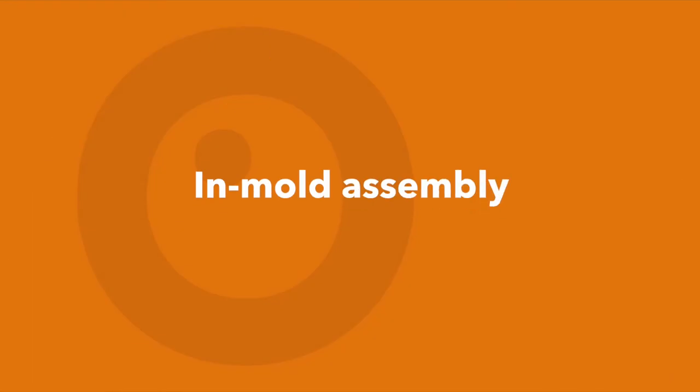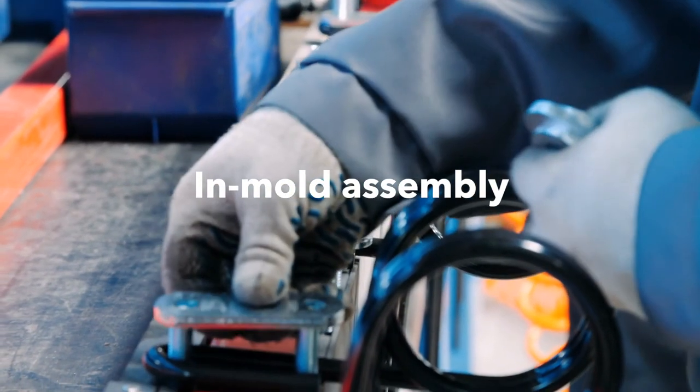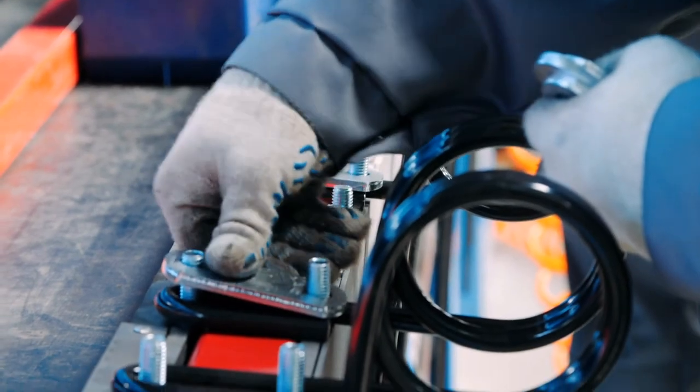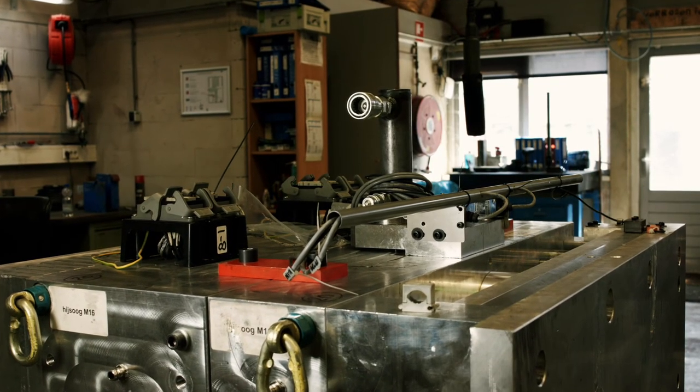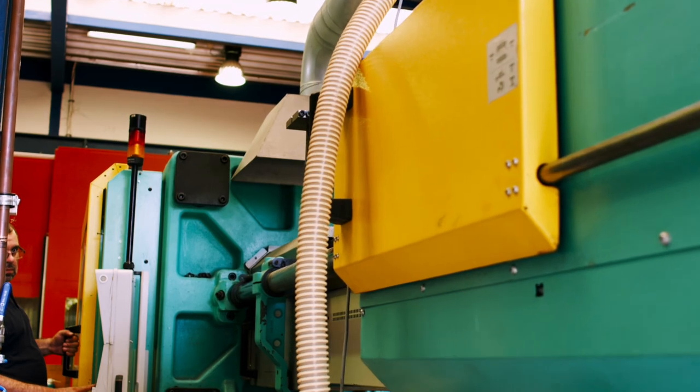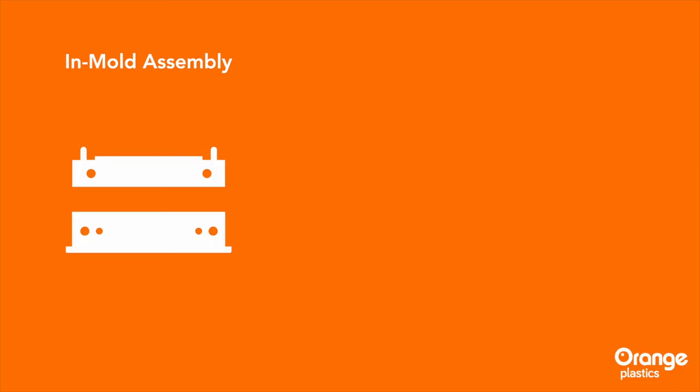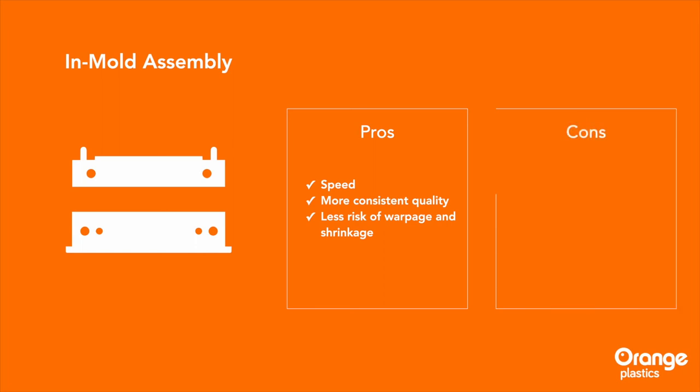In-mold Assembly. An innovative alternative to conventional manual assembly is called in-mold assembly. Here, multiple components are combined within the mold during the injection molding process itself. Aside from the obvious speed benefit, in-mold assembly usually results in products with more consistent quality as it ensures correct alignment and takes away many of the warpage or shrinkage issues that can occur during secondary operations. On the downside, in-mold assembly usually requires relatively high production volumes as mold investments can cost 30% to 70% more than standard molds.